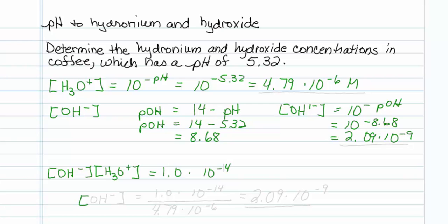So therefore, my hydroxide concentration is equal to 1 times 10 to the minus 14, divided by my hydronium concentration, which from up here is equal to 4.79 times 10 to the minus 6.